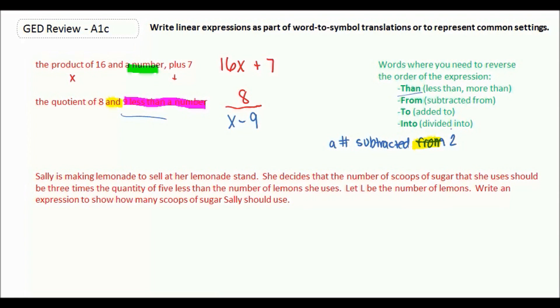Sally's making lemonade to sell at her lemonade stand. She decides that the number of scoops of sugar that she uses should be 3 times the quantity of 5 less than the number of lemons she uses. Let L be the number of lemons. Write an expression to show how many scoops of sugar Sally should use. So it's very wordy, but really what we're translating into math is: 3 times the quantity of 5 less than the number of lemons.